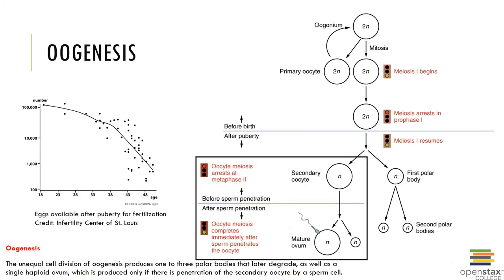Oogenesis is the production of eggs or ova, which occurs before birth and is completed only if the egg becomes fertilized by sperm. Meiosis begins before a woman's birth, accelerates at puberty, and ends at menopause.